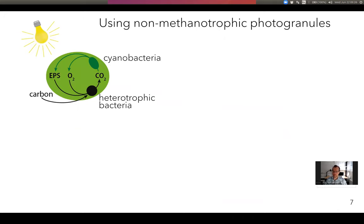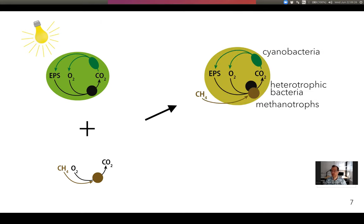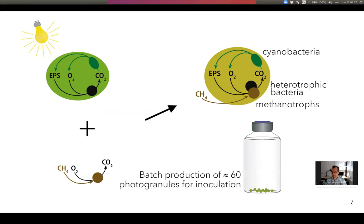We use non-methanotrophic photogranules as a chassis. In there, you find trophic interactions between heterotrophic bacteria and cyanobacteria, essentially around CO2 and oxygen: heterotrophs produce the CO2 that cyanobacteria take up, and cyanobacteria produce the oxygen taken up by heterotrophs, all fueled by carbon entering the system. What we did was add an enrichment of methanotrophs that convert methane by oxidizing it using oxygen to CO2, leading in theory to a new type of photogranule where cyanobacteria fuel both general heterotrophic bacteria and methanotrophs. We produced an inoculum of about 60 of these tiny photogranules, which we used in a CSTR reactor to launch a new operation.